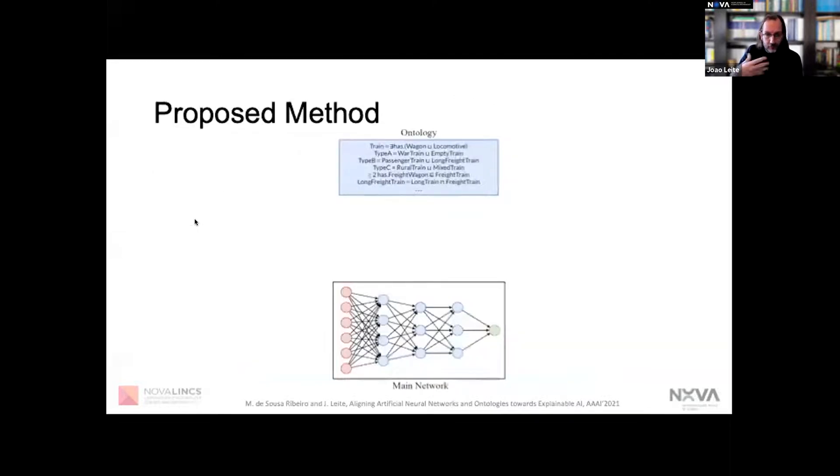Let's assume that we have a trained neural network for which we'd like to justify its output, and we have some ontology that includes the domain of discourse and existing background knowledge about that domain. Now, the big question is, how do we relate both systems?